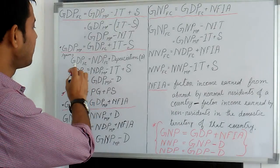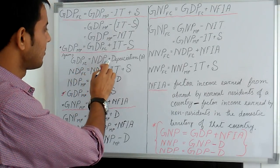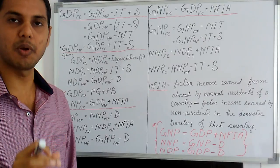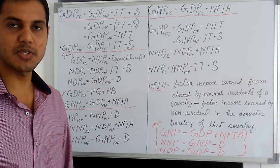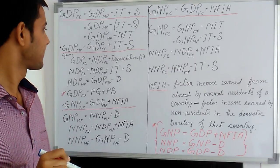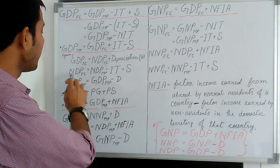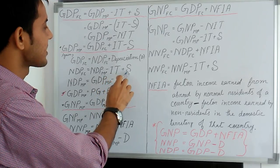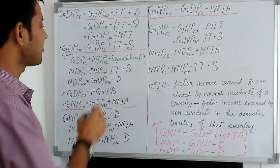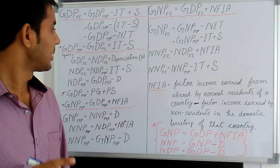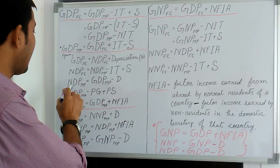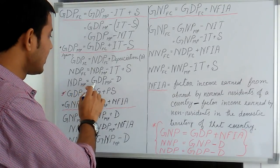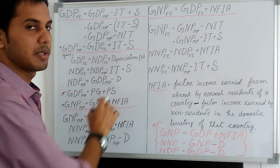GDP at factor cost equals NDP at factor cost plus depreciation, where NDP at factor cost denotes net domestic product at factor cost. NDP at factor cost equals GDP at market price minus indirect taxes plus subsidies. NDP at market price, which denotes net domestic product at market price, equals GDP at market price minus depreciation.